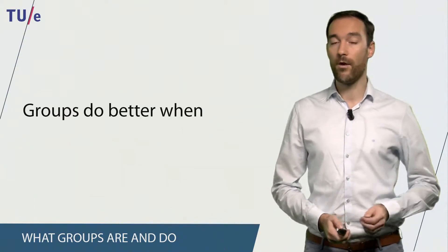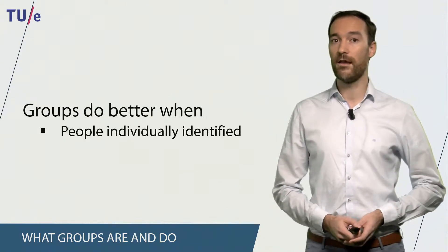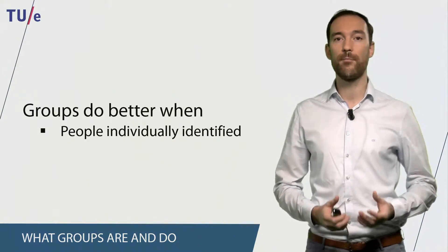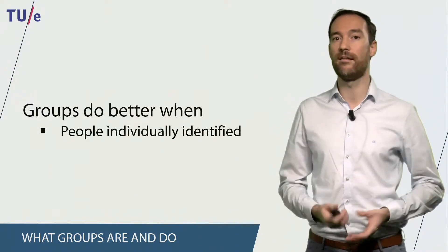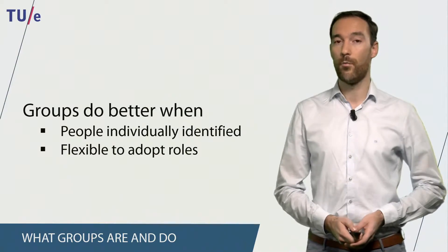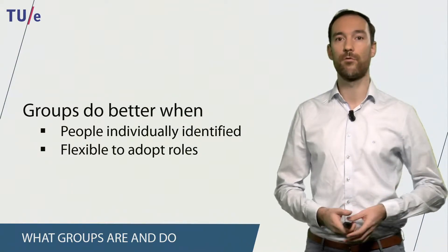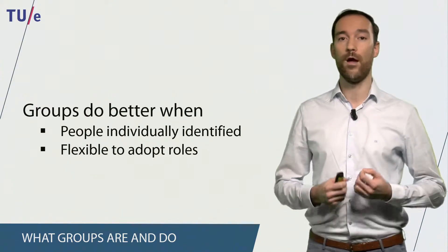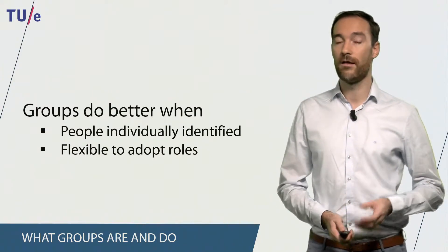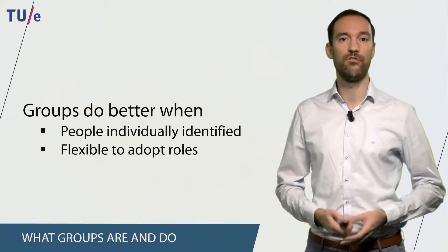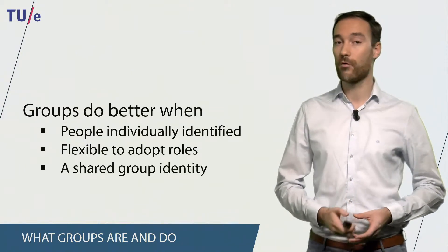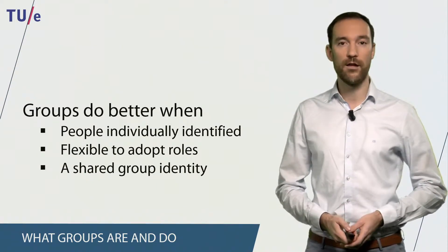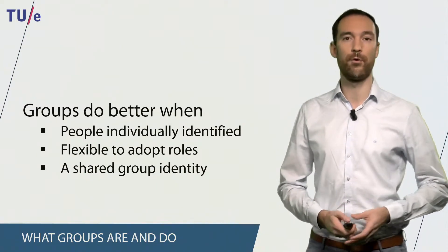Groups perform better when certain things apply. The first one is that people are individually identified, meaning that everybody can share their personal identity. Groups also do better when members are flexible to adopt different roles — if many people have the same profession or role, they should be able to adapt and change. A group also does better when there is a shared group identity, for example when you together support a sports team or a political party.